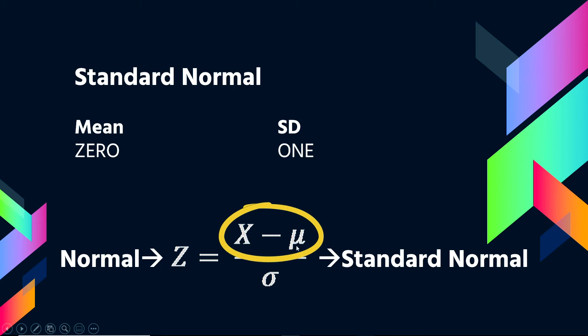So now any value that was at the mean would become zero. And then this tells you how the values spread around the mean. Once you've done that, you divide by the standard deviation. And what this does now is it makes it such that your new unit of measure is in standard deviation units.